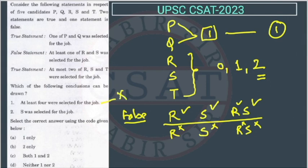Now, second, S was selected for the job. So, according to this false statement, S is not getting selected. And this is saying S was selected. So, this is also wrong. Second option is also wrong.